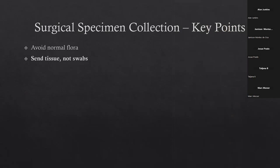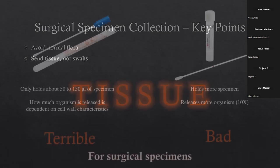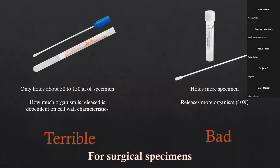Here's the biggie — and micro labs all over the country and world will complain about this. What we want is tissue. If you're going to go in to collect tissue during surgery, we want the tissue. We do not want a swab of the tissue. We want a specimen, not a swab of a specimen. Tissue is what we want to get.